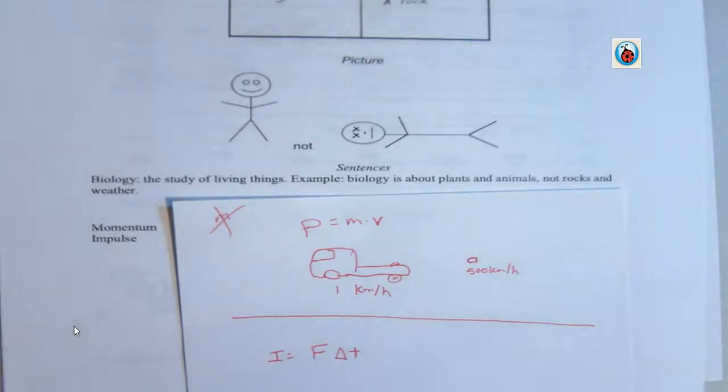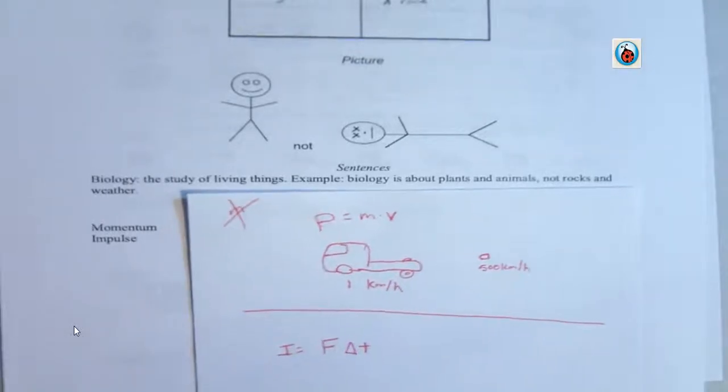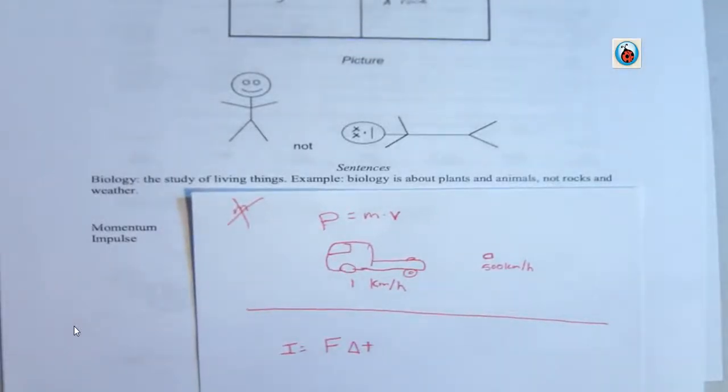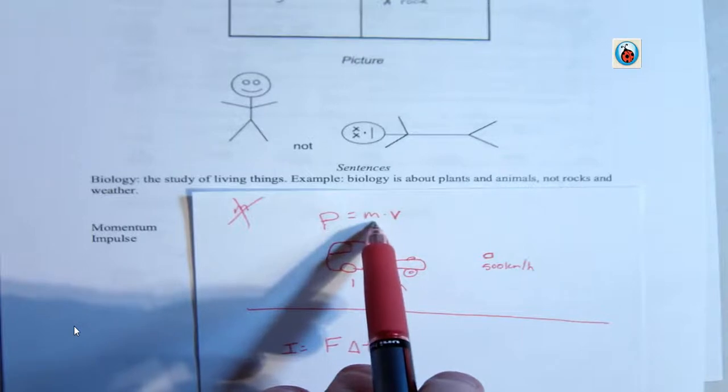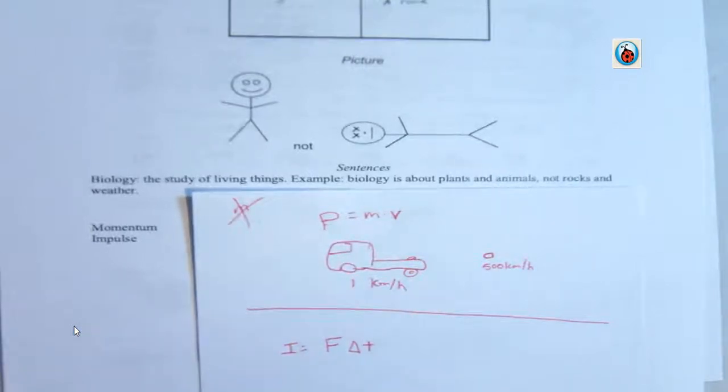So, if something has a huge mass, it's going to have quite a bit of momentum if it has some kind of velocity. I'll give you an example. Let's say you have a really big dude that weighs 200 kilograms running at you, and he's running at 2 meters per second. And then you have a small dude that weighs 50 kilograms running at you, and he's also running at 2 meters per second. So, we have the same velocity, just drastically different masses.